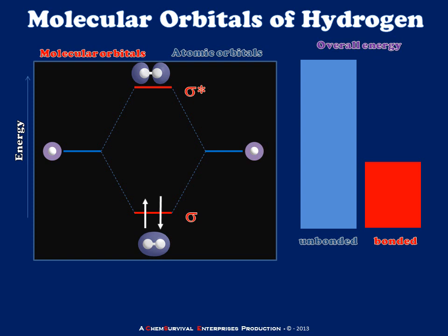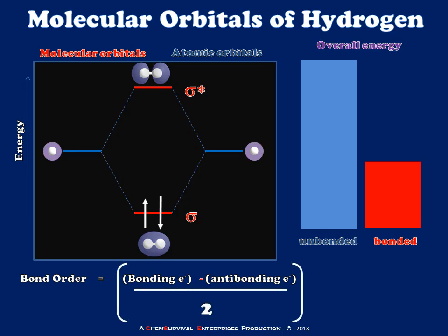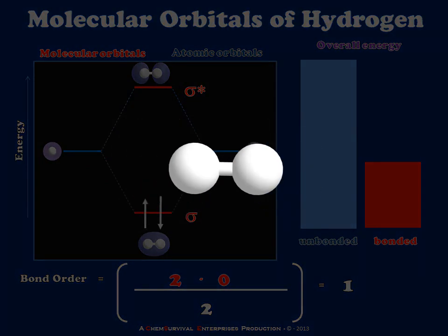The energy of the system overall has decreased, meaning there is an immediate energetic benefit to bonding. I can calculate the order of the bond by taking the number of bonding electrons, subtracting the number of antibonding electrons, and dividing by two — to acknowledge that there are two electrons involved in each chemical bond. In this case, I have two bonding electrons in the sigma molecular orbital and zero electrons in the antibonding sigma star. This allows me to predict that my hydrogen molecule will be joined by a single bond, and this is in fact the case.